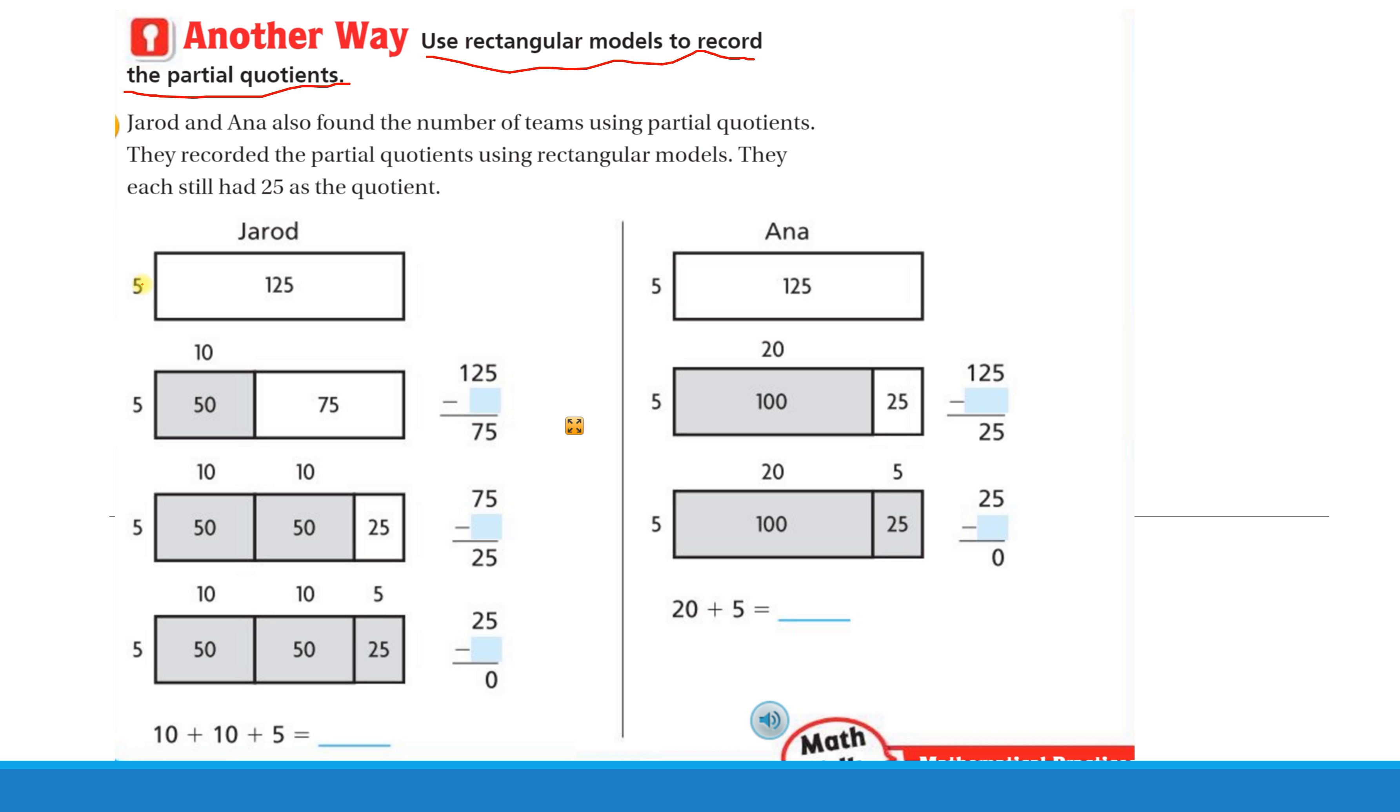So Jared started this way. He said, I need 5. Remember when we were using our rectangular models, his is 5 high, and then he counted till he got to 125, and then he broke it up. He said 10 times 5, there's my 50, and subtracted 50 to get 75 left. So this is the part he's used so far to solve. This is the part of the quotient that he's used so far. He still has this 75 left.